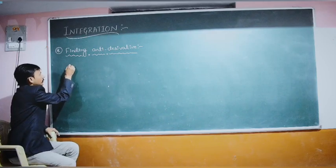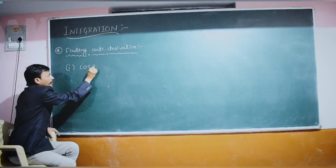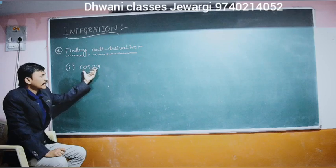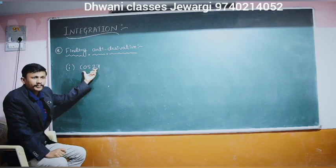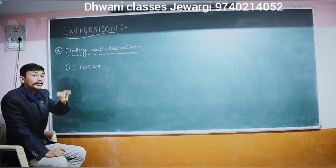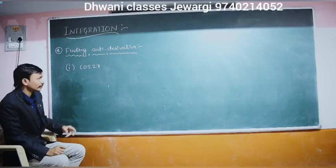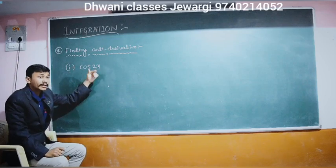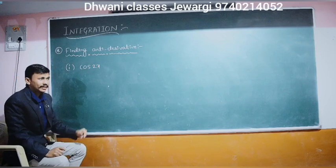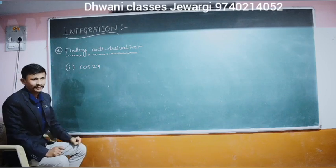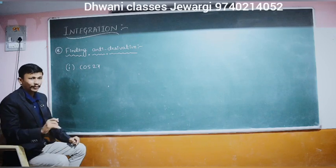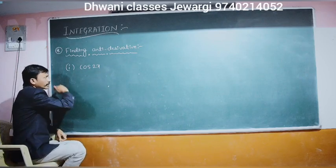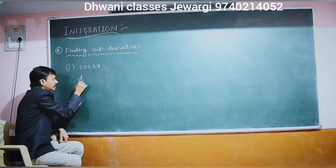Let's take the example of cos(2x). What is the differentiation of cos(2x)? The differentiation of cos(2x) is -sin(2x) into 2. So let's check the differentiation first and use that to find the anti-derivative.